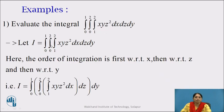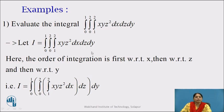Now let us go for the main example. Evaluate the integral: integration from 0 to 1, integration from 0 to 2, integration from 1 to 2, of x·y·z² dx dz dy. Let I equal to this integral. The differentials are arranged as dx, dz, dy. Therefore the order of integration is first with respect to x, then with respect to z, and then with respect to y.